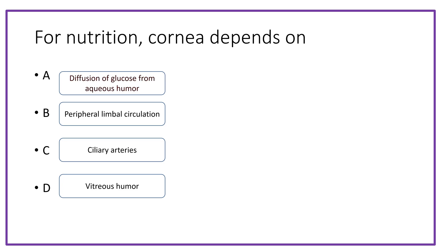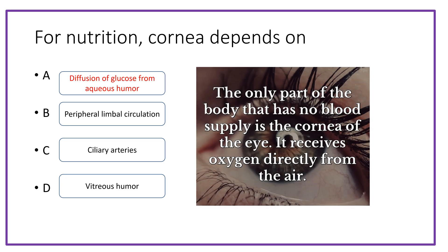The answer is diffusion of glucose from aqueous humor. As you all know, the cornea is the only avascular portion of the eye, so it receives glucose from the aqueous humor and also oxygen from the atmosphere.